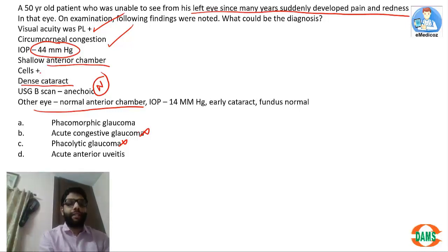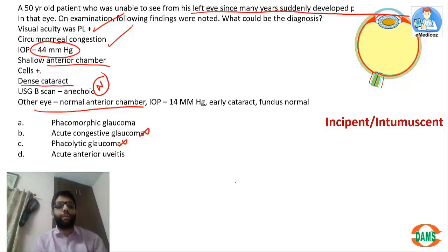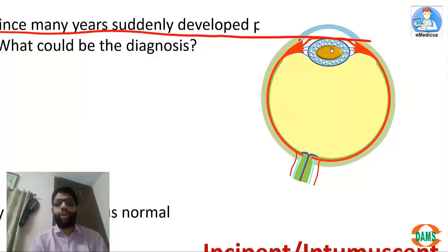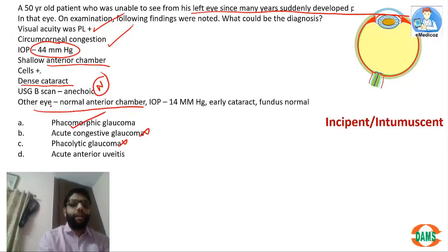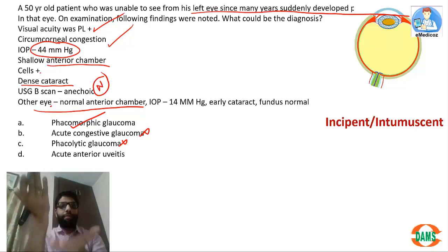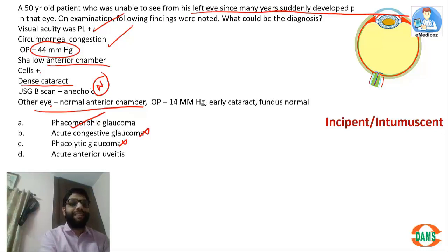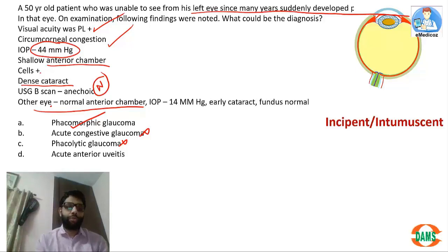The answer is phacomorphic glaucoma. In the intumescent stage of cataract, the lens becomes swollen, pushes the iris forward, closes the angle, and causes secondary angle closure with high pressure. Acute anterior uveitis is also considered since there are cells and possible pupil block, but there would not be a dense cataract in acute anterior uveitis. Therefore, phacomorphic glaucoma is the correct answer.